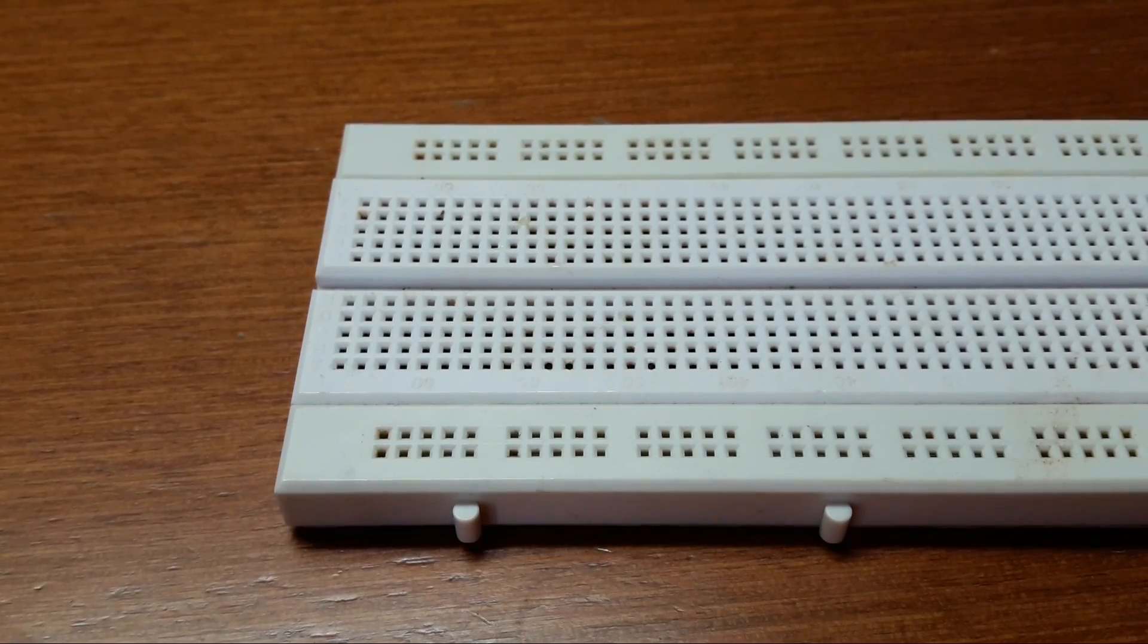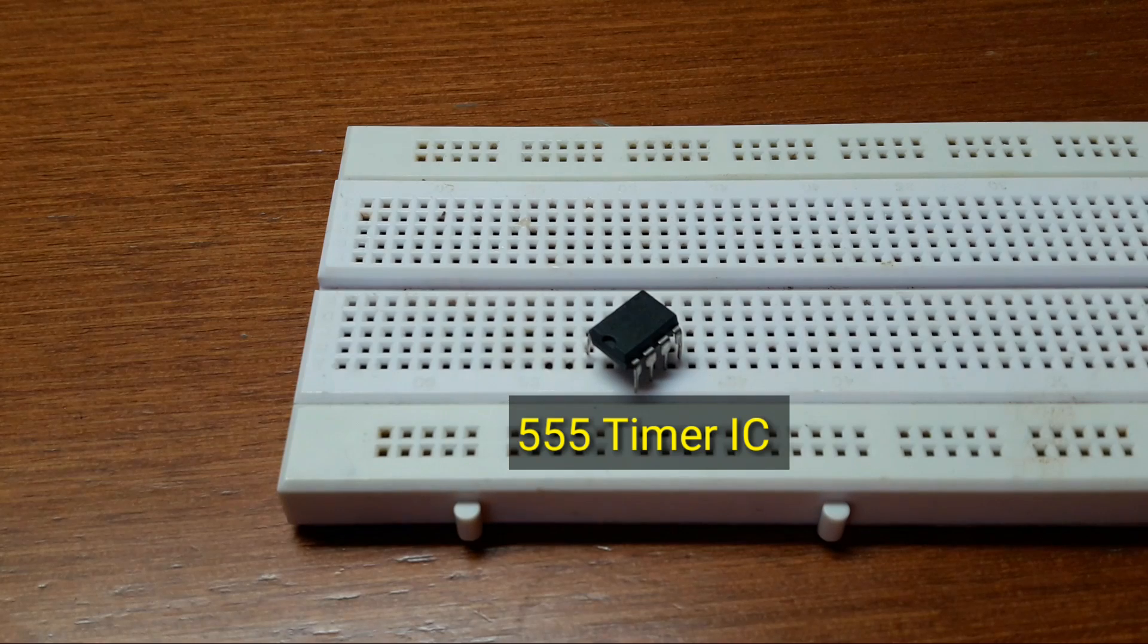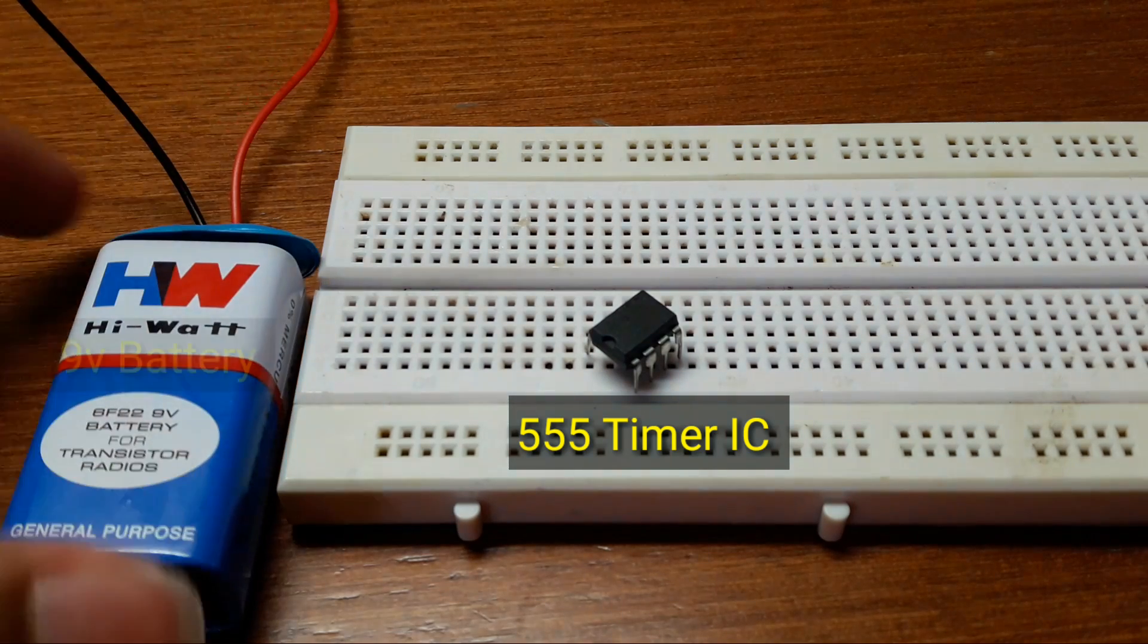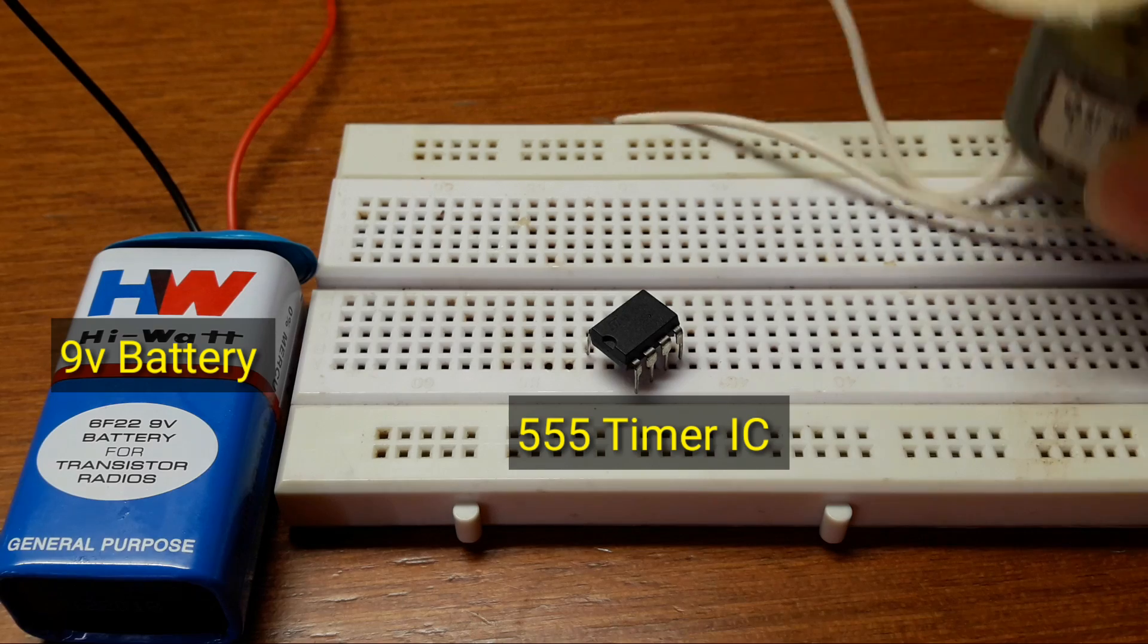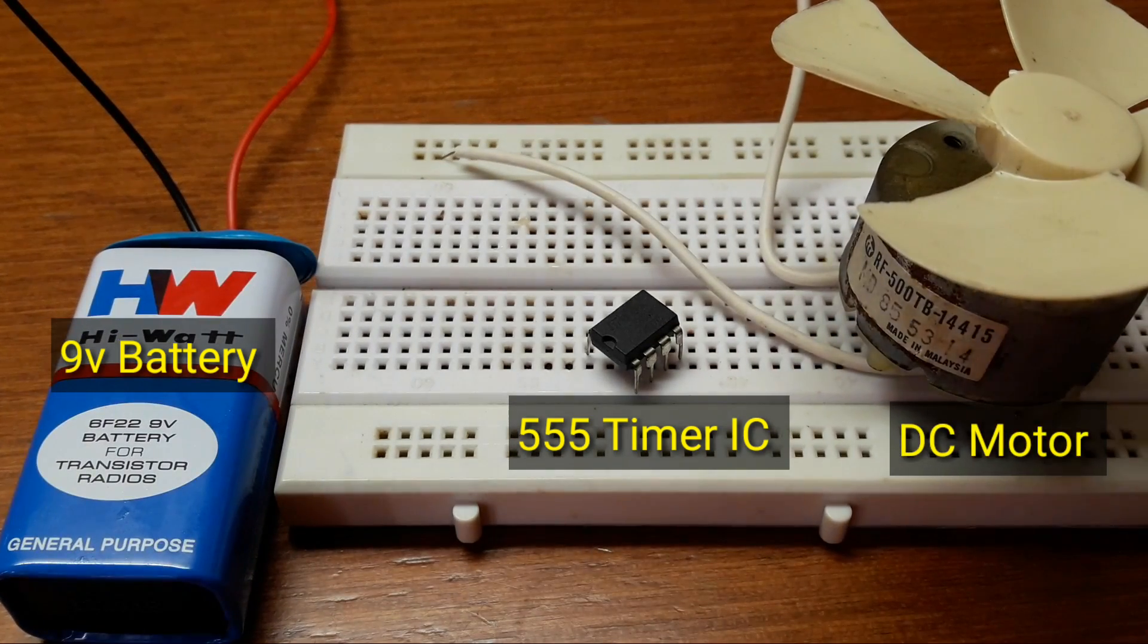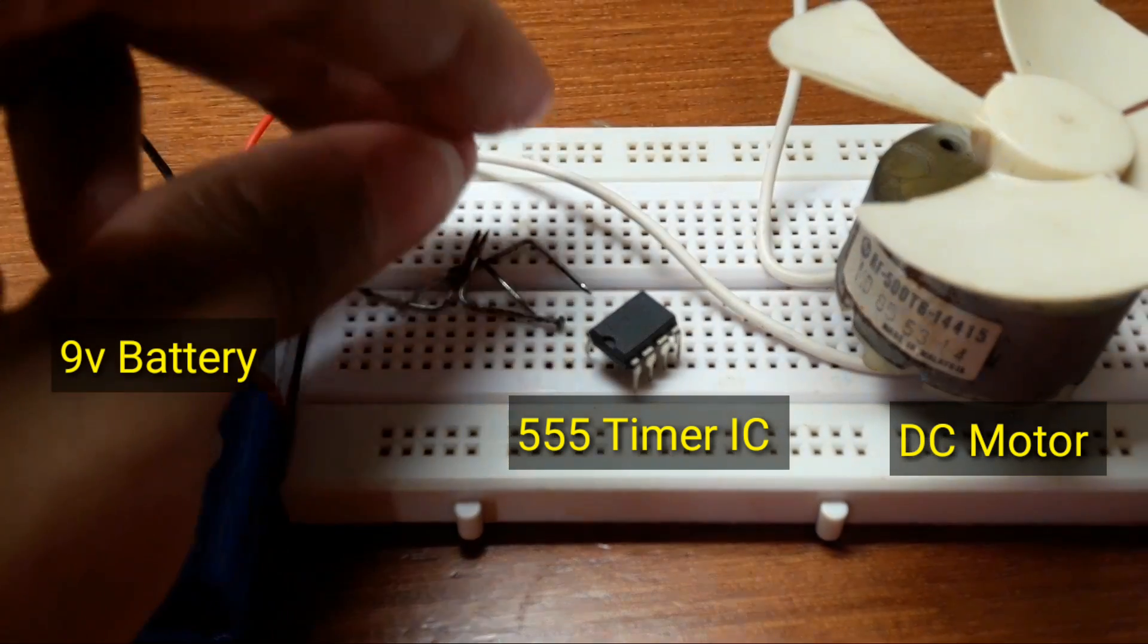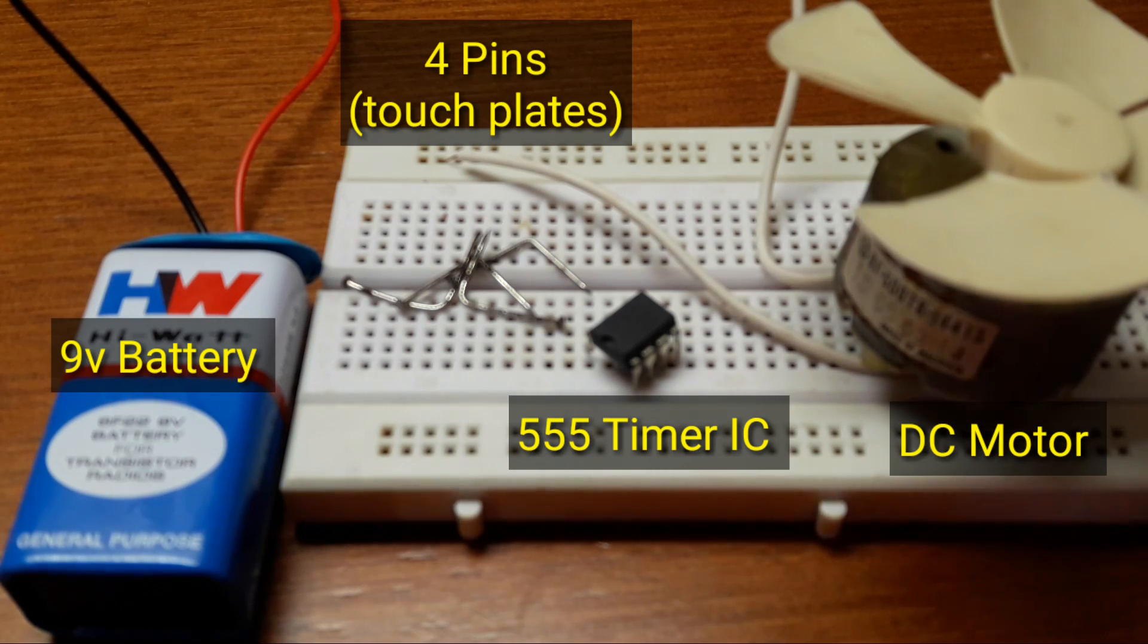So to make this circuit, you require a 555 timer IC, a 9V battery with battery clip, a DC motor with a propeller attached to it. You will need some touch plates. I'm using four pins as touch plates. You can even use a wire, make sure you remove the insulation of the wire and some connecting wires.